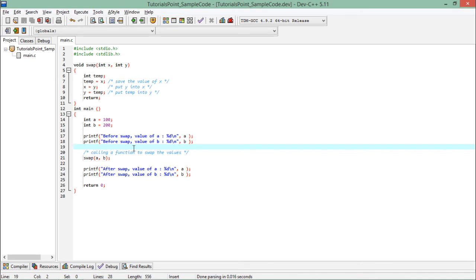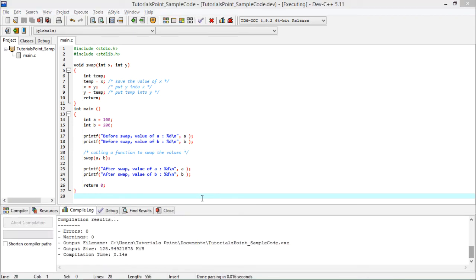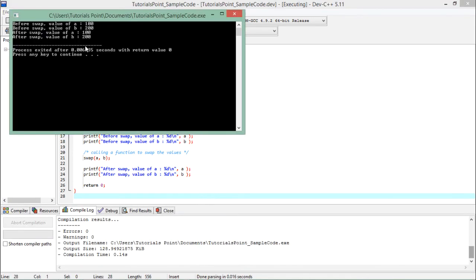Because if you will make any changes in x and y, they will have their separate copy of values and that will not affect the values which are stored in a and b. So even before swap method call and after swap method call, you will observe the values are same.